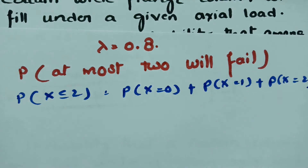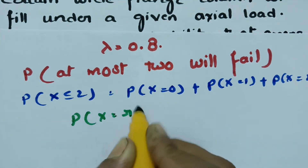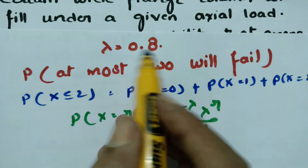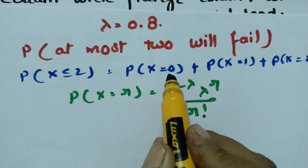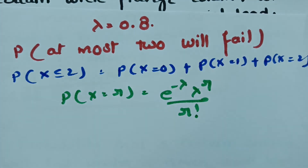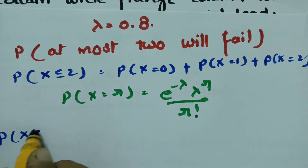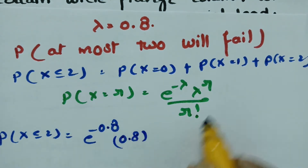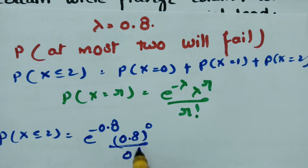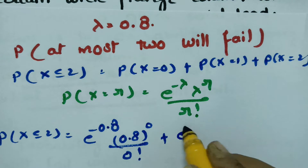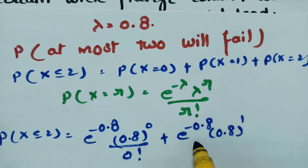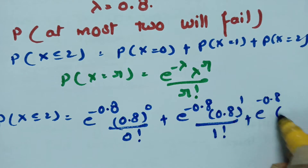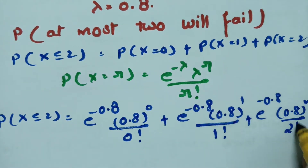According to the Poisson distribution formula, P(X=R) = e^(−λ) × λ^R / R!. Our lambda value is 0.8. For R=0: e^(−0.8) × 0.8^0 / 0! . For R=1: e^(−0.8) × 0.8^1 / 1!. For R=2: e^(−0.8) × 0.8^2 / 2!.